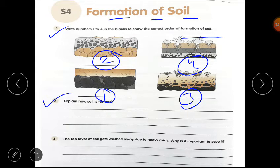Question number 2. Explain how soil is formed. The rocks break due to rain, wind, heat and cold. Small plants grow on these pieces. The rocks break further. More plants grow on them. The rocks break more and soil is formed.